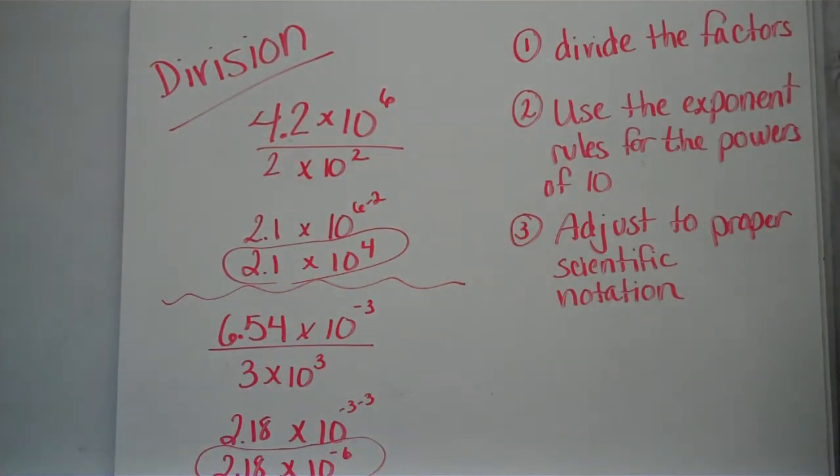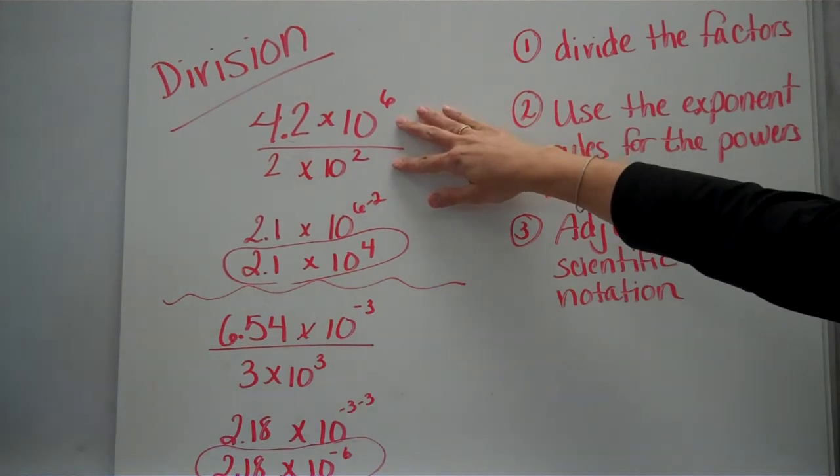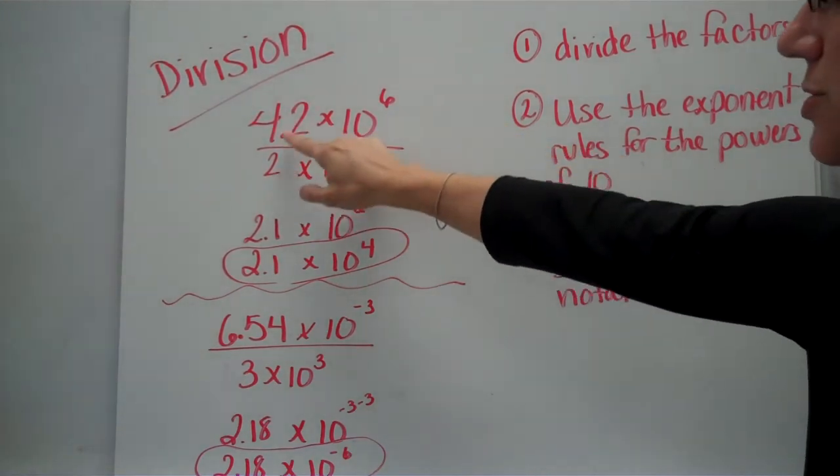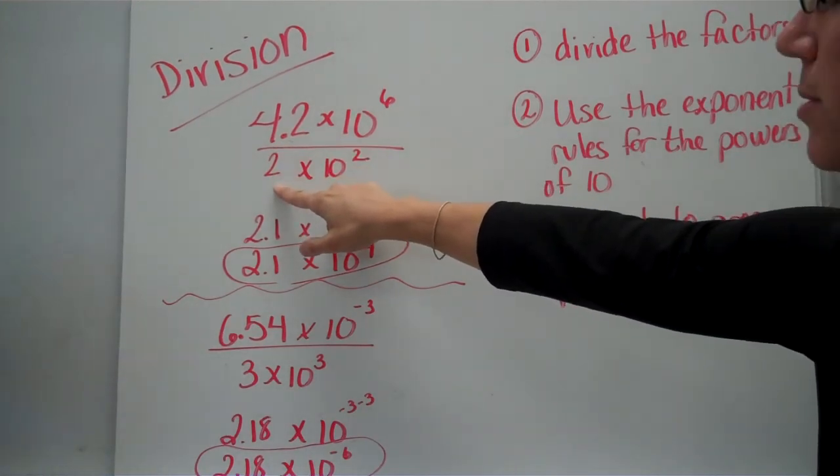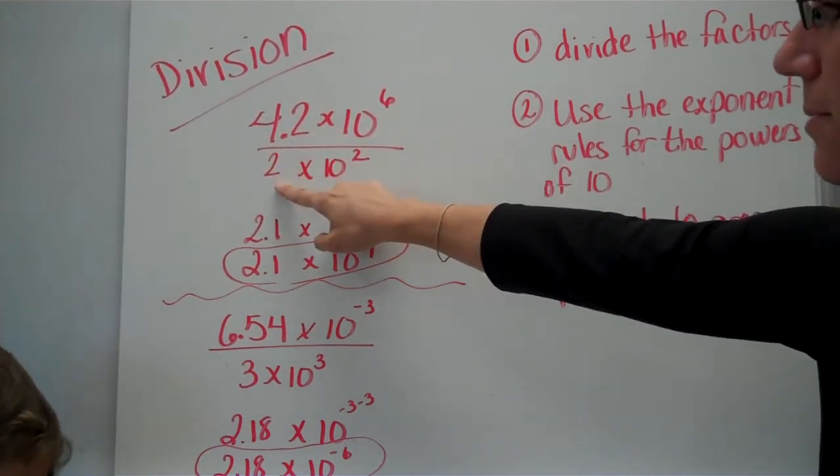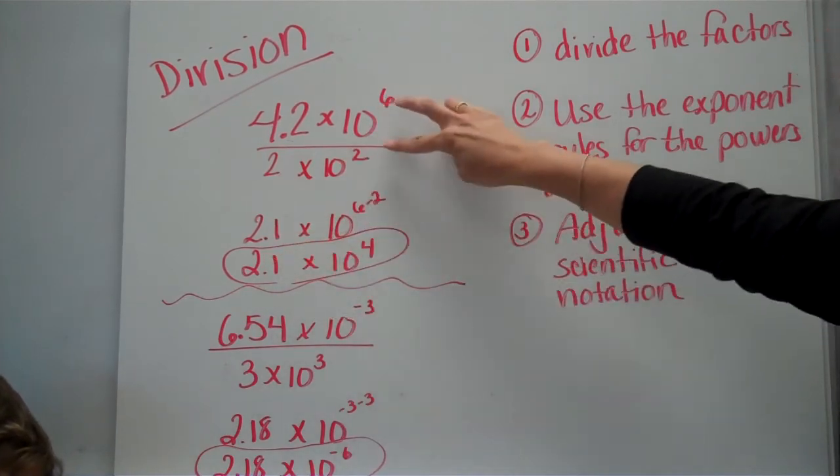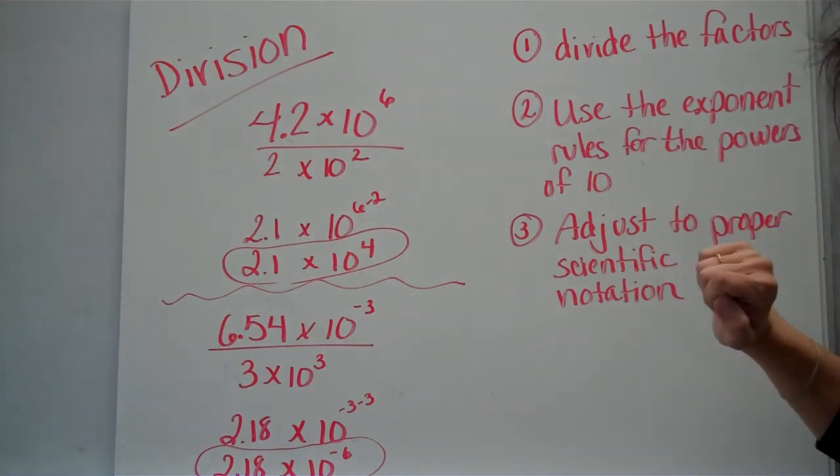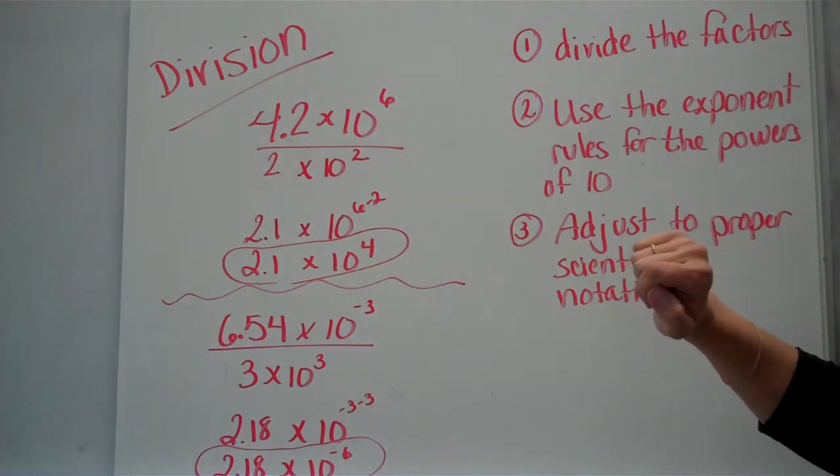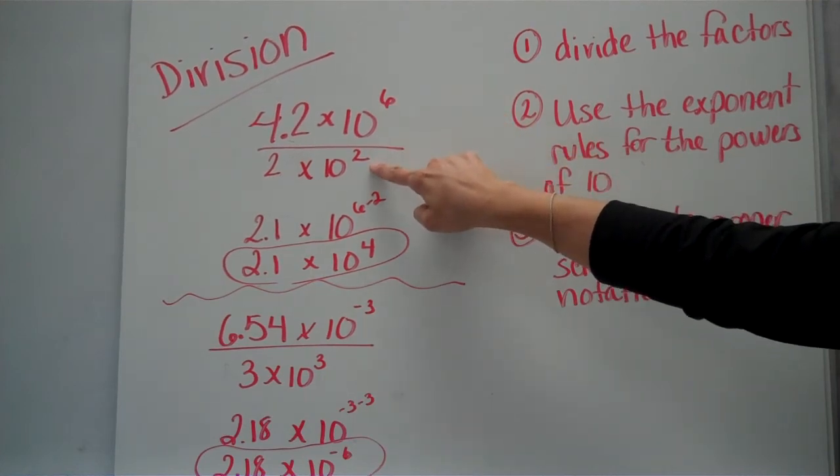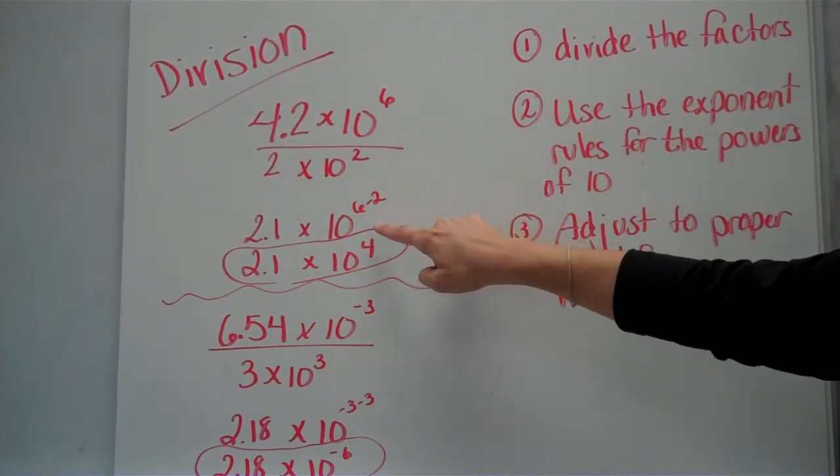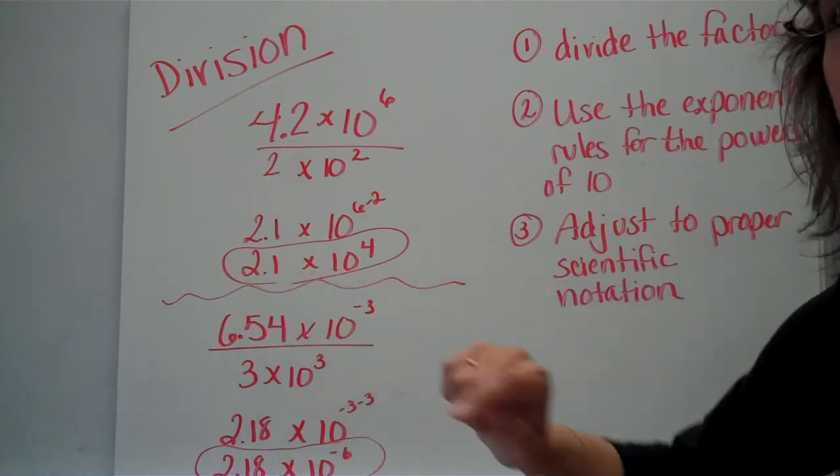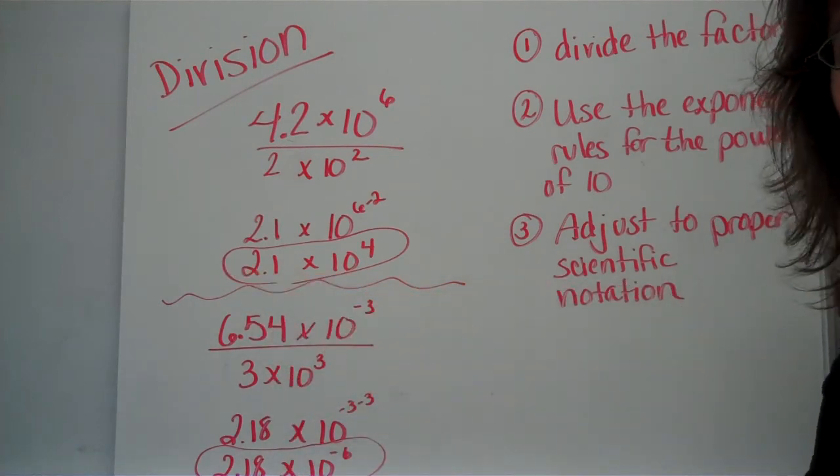Last but not least is division. So here's my problem. What we're going to do is we're going to take the factors and divide them. Because remember, a fraction is a division problem. So you're doing 4.2 divided by 2. And now you're going to take your powers of 10 and use your exponent rules. Remember what to do for dividing exponents with the same base? You subtract them, right? 6 minus 2 gives you 4. Now this already is in proper scientific notation. It is a number. The factor is a number between 1 and 10. So you're all set.